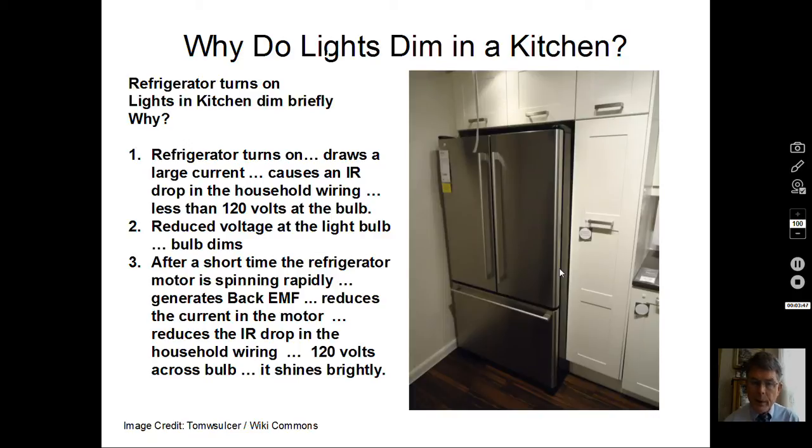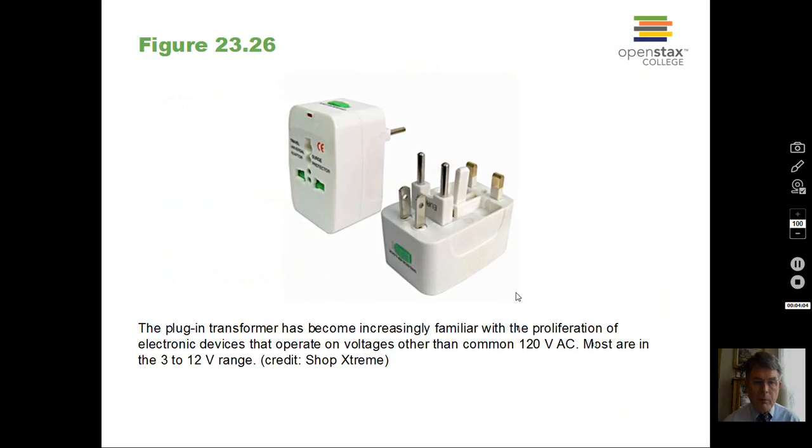When the motor gets up to speed, the refrigerator is no longer drawing a high current. And the IR drop, the V equals IR drop in the household wiring is now less. The light bulb goes back to 120 volts across it, and it shines as it should. So back EMF.